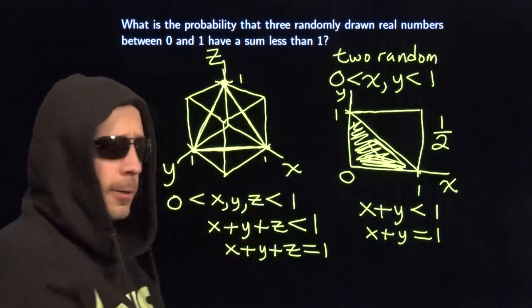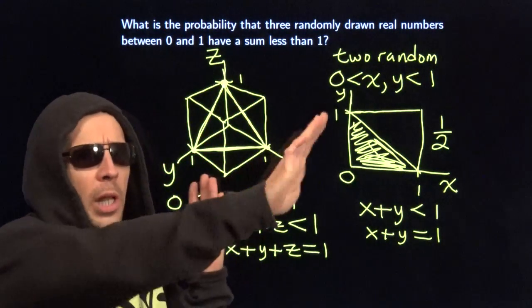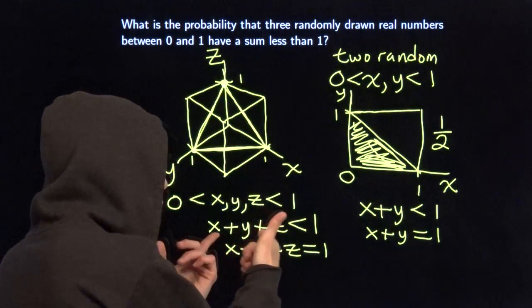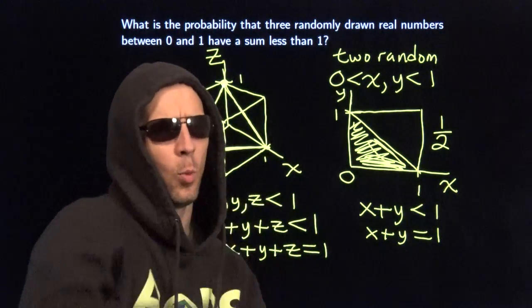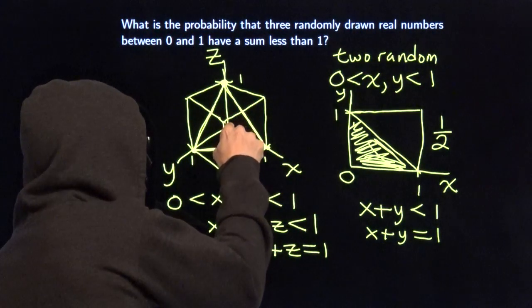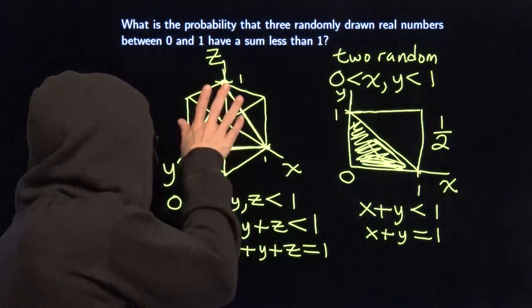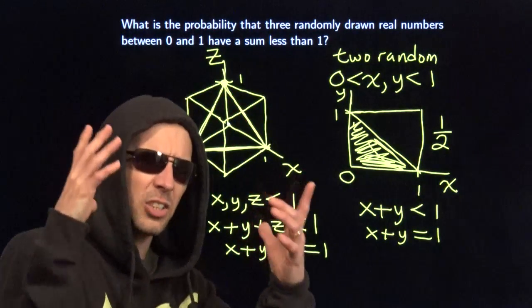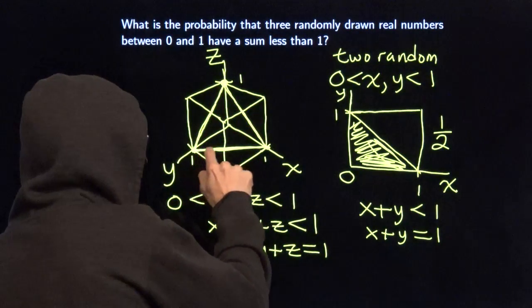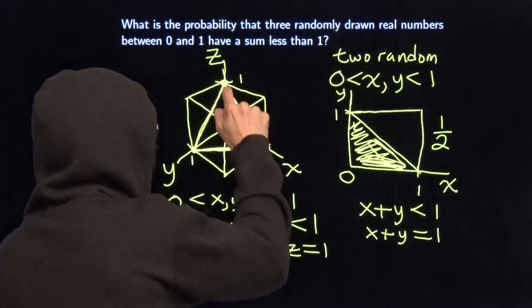And this triangle is part of a whole plane where X plus Y plus Z equals 1. But we want X plus Y plus Z to be less than 1. So we gotta go below this plane. We gotta go back towards the origin back there where they're all 0. So we want everything under there. That's our desired region. It's got these three sides of this triangle as edges.